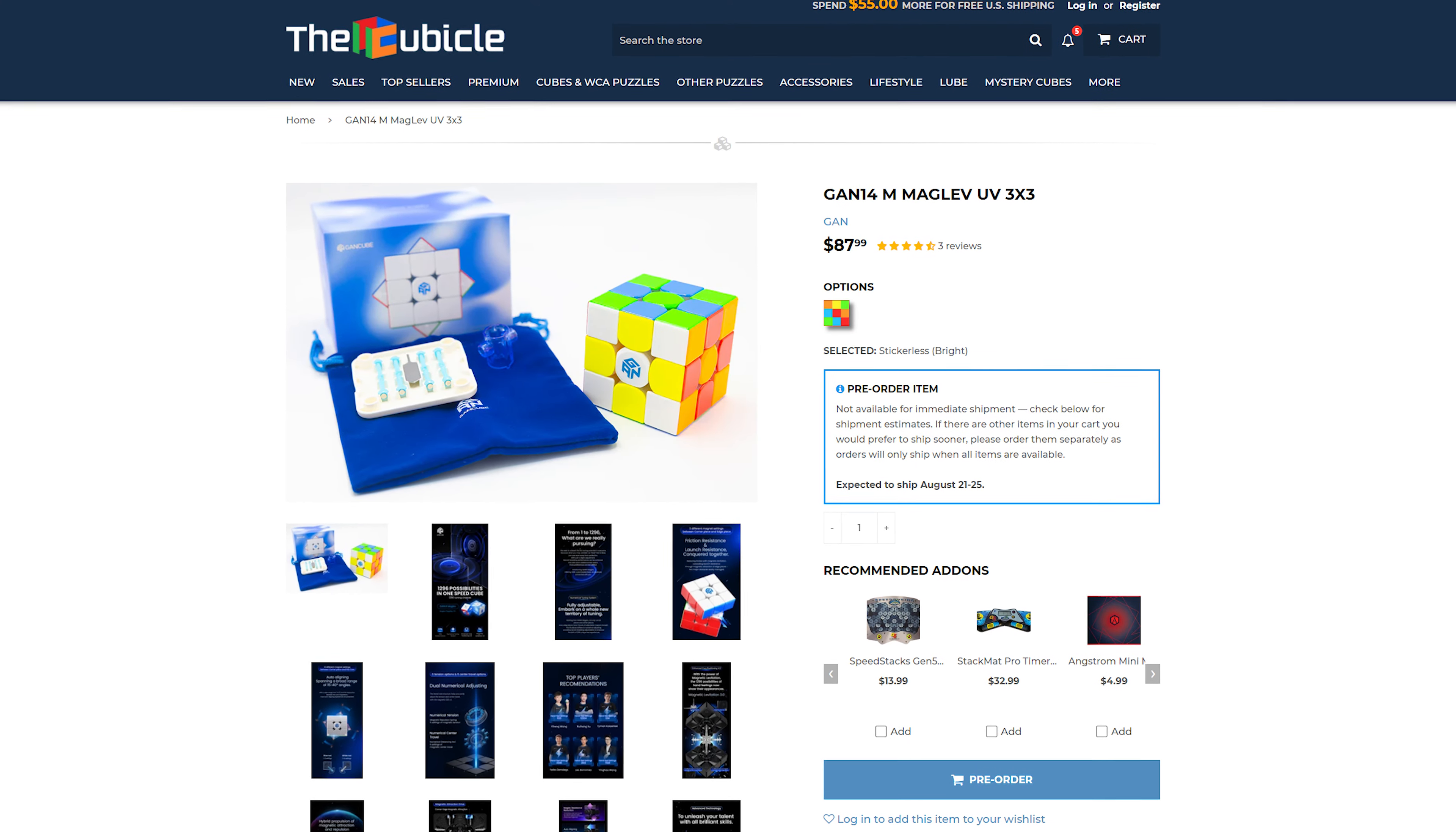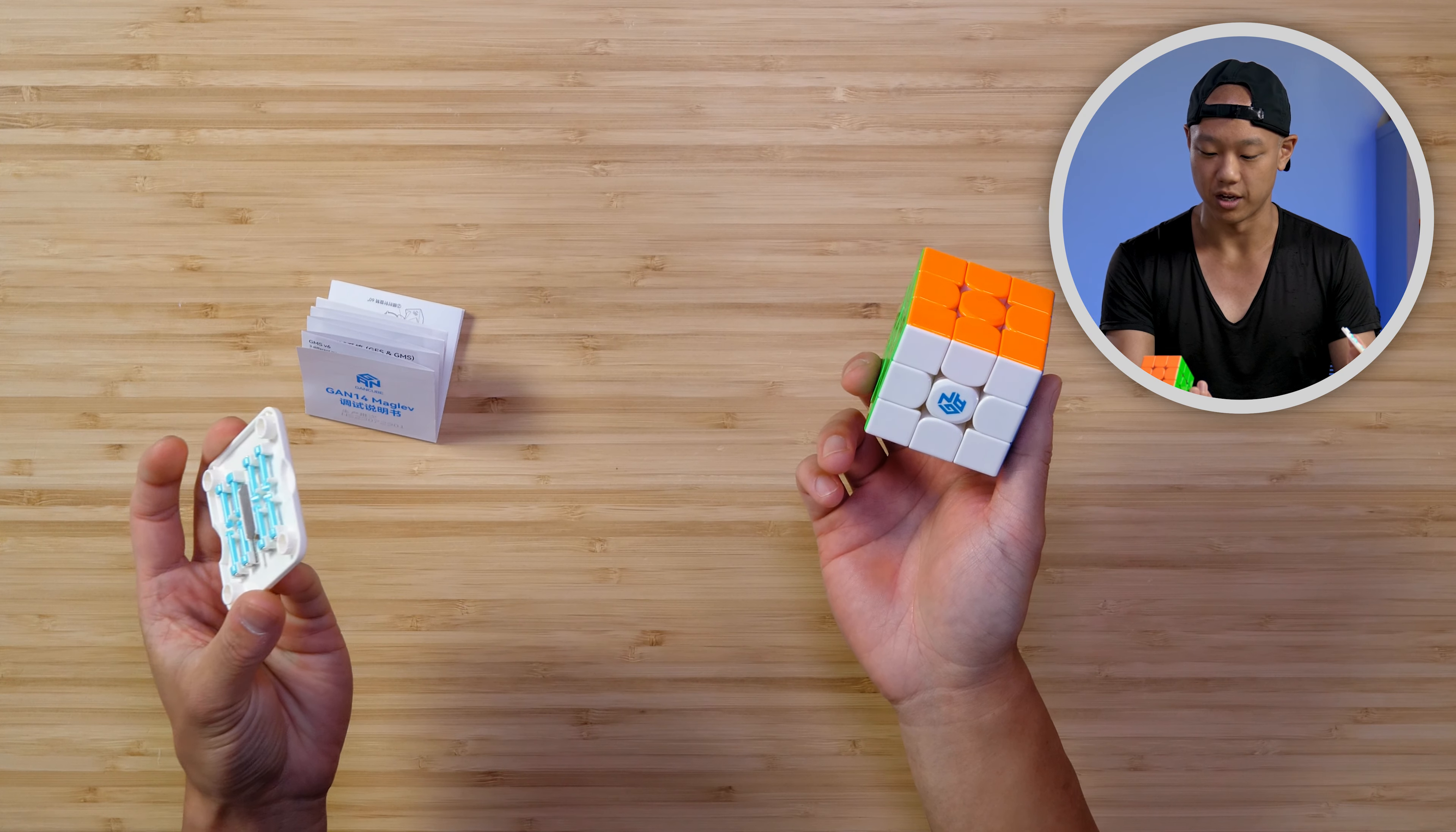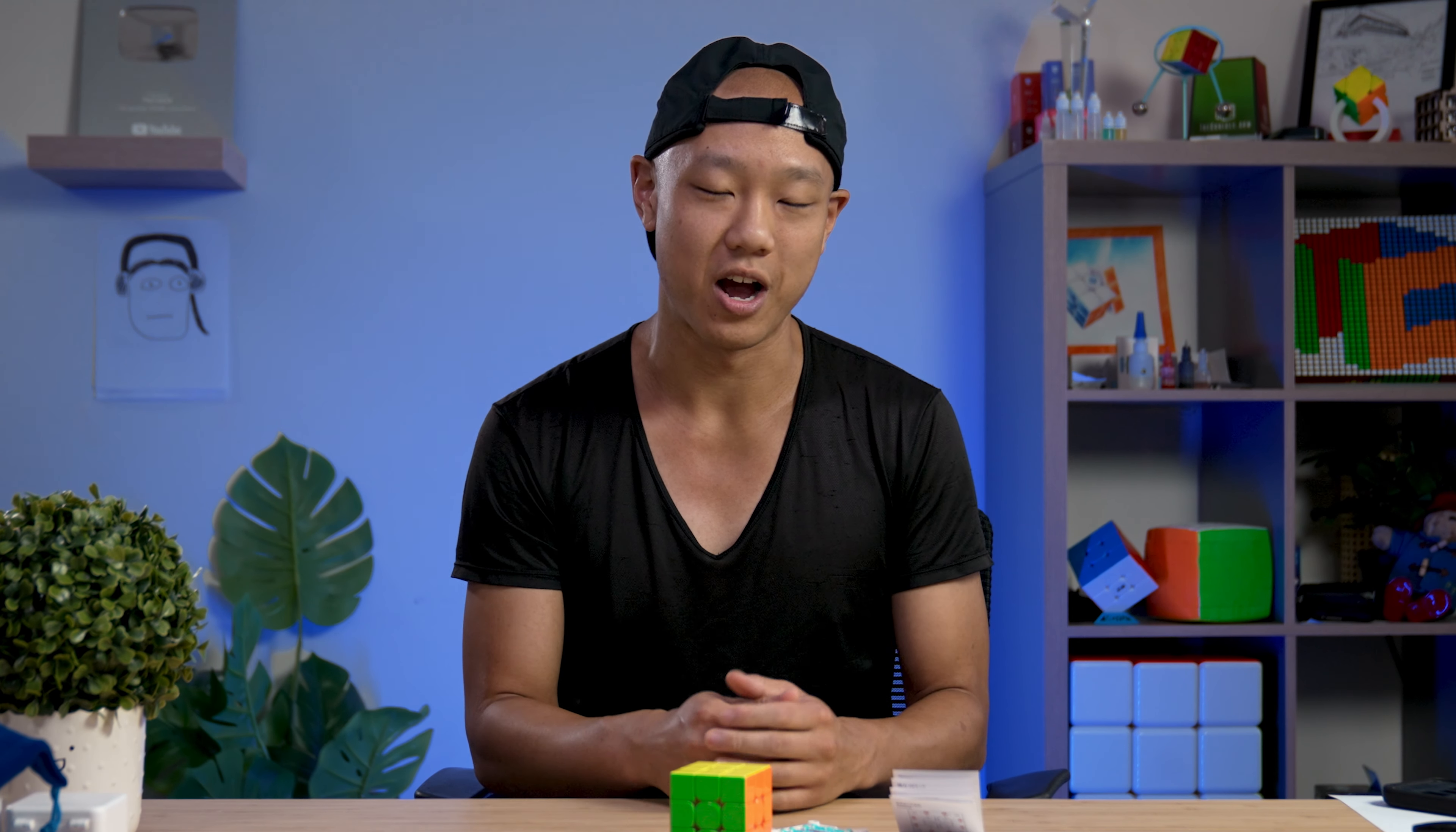This cube is available for pre-order at thecubicle.com. It's $87.99, weighs 71 grams, and like all the other GAN cubes it's 56 millimeters. It has basically adjustable anything. There are so many things you can do and GAN is really pushy with the whole over a thousand configurations.